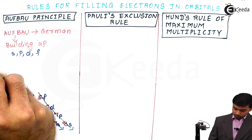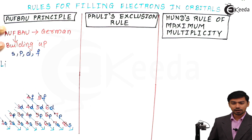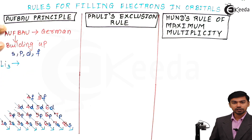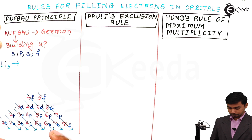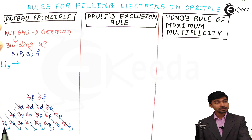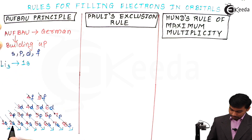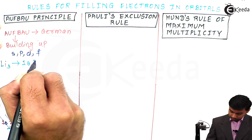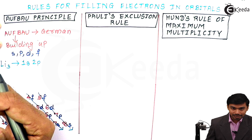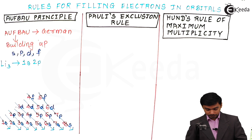Let us draw the electronic configuration of lithium, which has atomic number 3. According to the Aufbau principle, the first orbital in order is 1s, so we write 1s. The second is 2s, so we write 2s as well. We will come back to the exact filling details later.